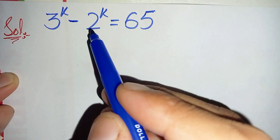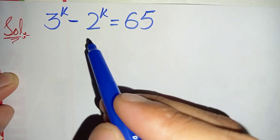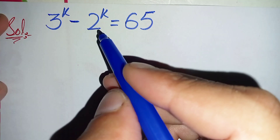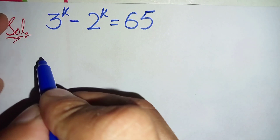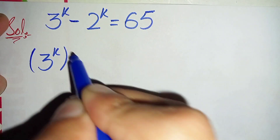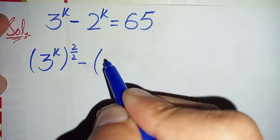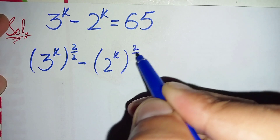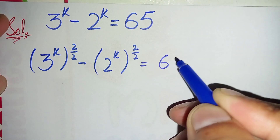Here we will try to make the left hand side as a difference of squares algebraic identity, a squared minus b squared. To make that identity, we will multiply and divide 2 in the power in both the terms on the left hand side. So this will become 3 raised to power k, all raised to power 2 divided by 2, minus 2 raised to power k, all raised to power 2 divided by 2, is equal to 65.